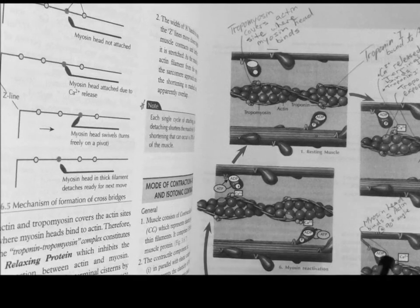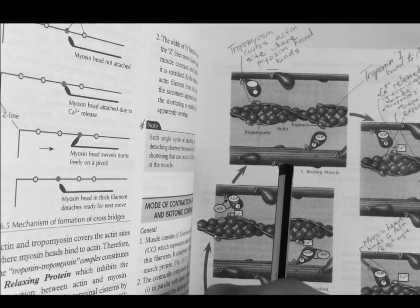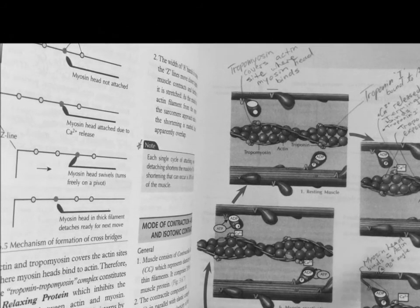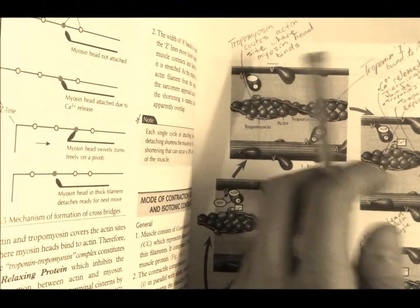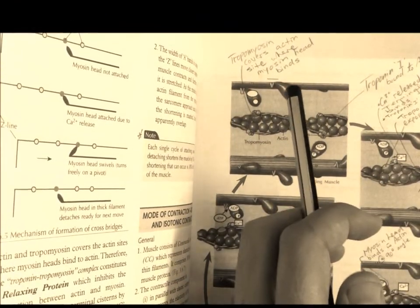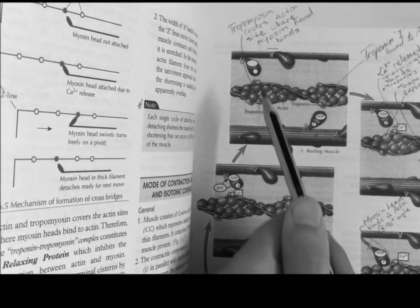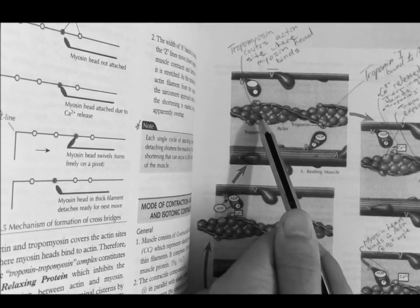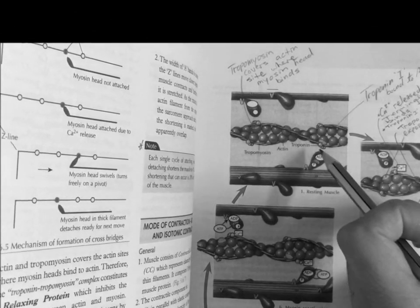So, we start at the resting stage. Actin and myosin are prevented from interacting with each other because of something called a relaxing protein. Now, troponin and tropomyosin, they form a complex which is the relaxing protein. What tropomyosin does is as you can see right here, it covers the actin site where the myosin head can bind to. And here, troponin I is bound to actin.